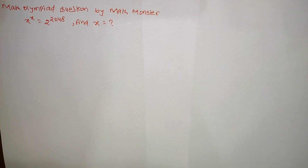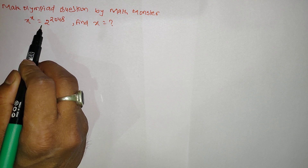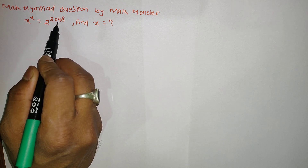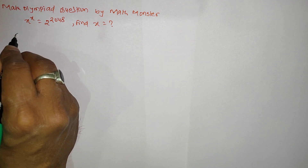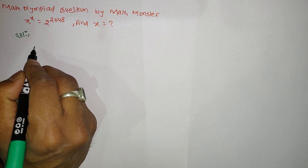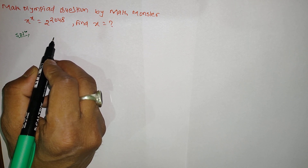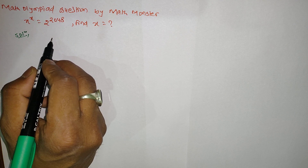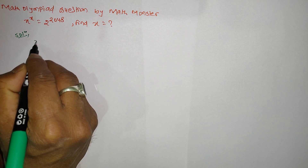Hello everyone, welcome to a new video. This is Dickes here. Today in this video we have a Math Olympiad question where it is given that x^x equals 2^2048 and we have to find the value of x. If you know the answer, please write it in the comment section, and those who don't know the answer, please watch the video till the end.